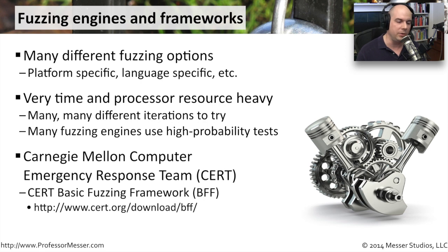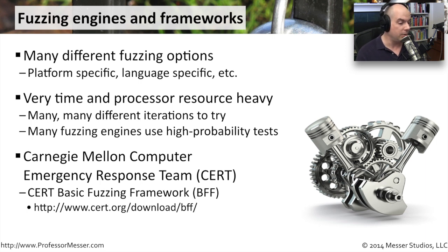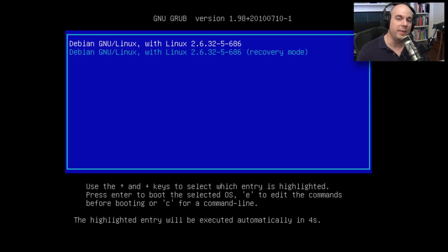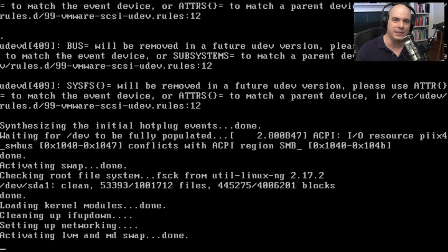One framework you can download and try is from the Carnegie Mellon Computer Emergency Response Team — the CERT Basic Fuzzing Framework, or BFF. They even have a VMware image you can run from cert.org/download/BFF to try some fuzzing yourself. This virtual machine comes with an application inside that is already susceptible to a number of fuzzing techniques. When you run it, it will launch and automatically start the fuzzing process, trying different fuzzing techniques to find places where the application fails, stops talking, or breaks in some way.